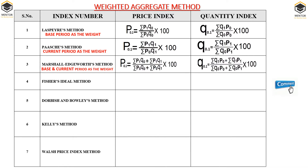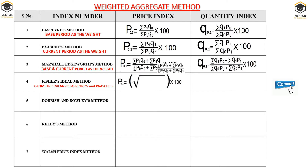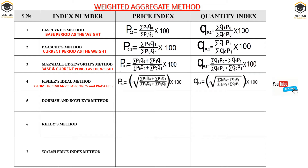Next we have Fisher's ideal method. Here the author takes the geometric mean of Laspeyre's and Paasche's. It means the author takes the square root of the product of the Laspeyre's and Paasche's formulas. The Marshall-Edgeworth formula contains both Laspeyre's and Paasche's, so under Fisher's we take the square root of that combination. P01 equals the square root of the Laspeyre's times Paasche's price index formula, into 100. The same square root approach applies to the quantity index of Marshall-Edgeworth.